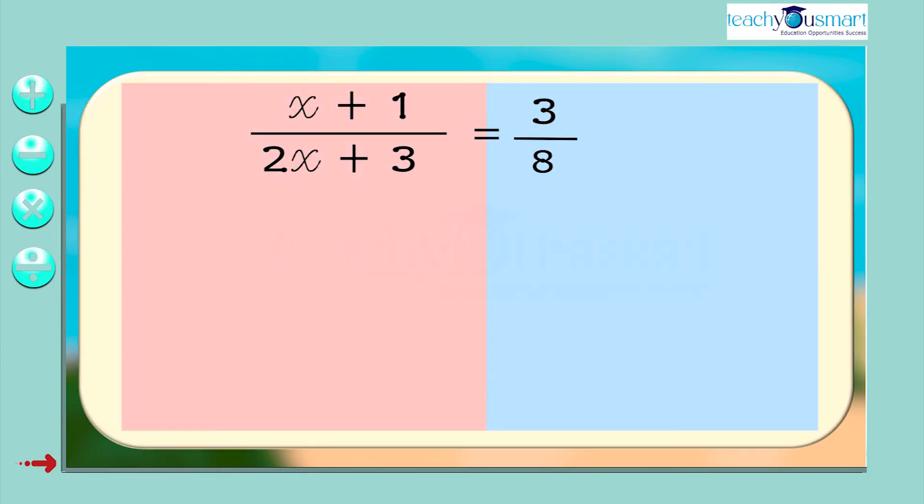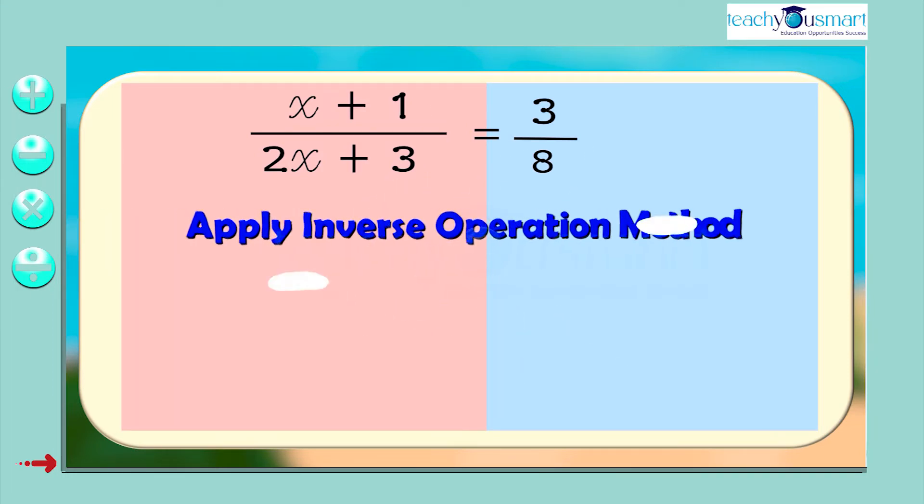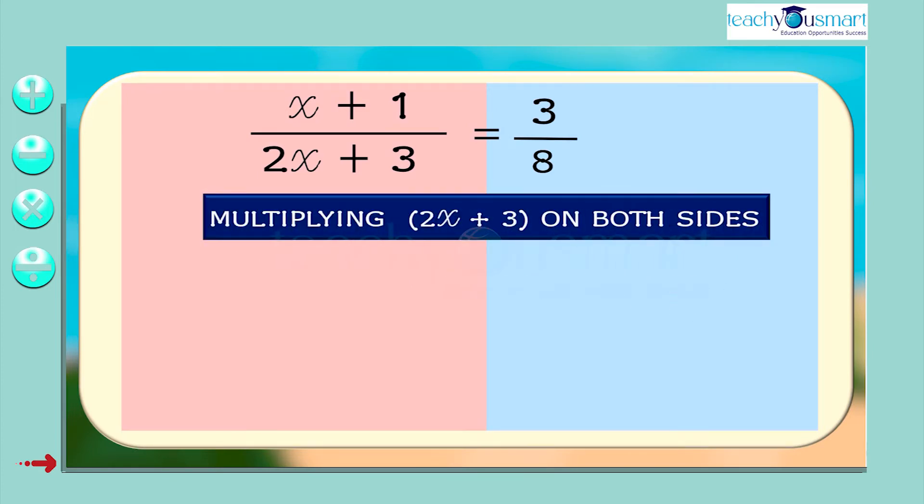Take the equation x plus 1 divided by 2x plus 3 equals 3 by 8. Let's solve this equation by inverse operation method. If we multiply 2x plus 3 on both sides, it becomes linear.